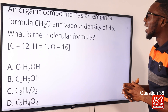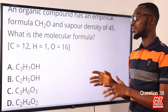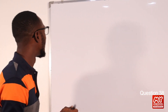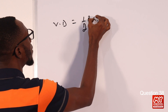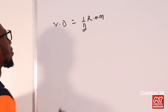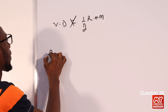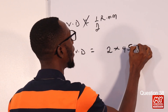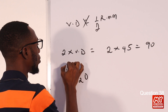Question 38. An organic compound has an empirical formula CH2O and vapor density of 45. What is the molecular formula? We can use this formula: vapor density equals half of relative molecular mass. So VD equals half of RMM. We are looking for RMM first — it will be 2 times vapor density. We are given vapor density as 45, that will be 2 times 45, which makes 90. Remember the empirical formula is CH2O.